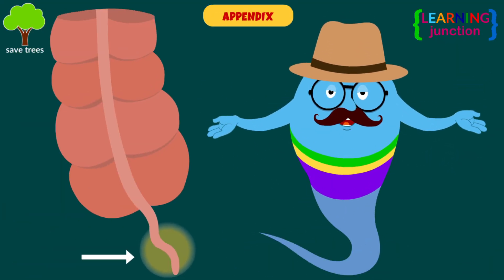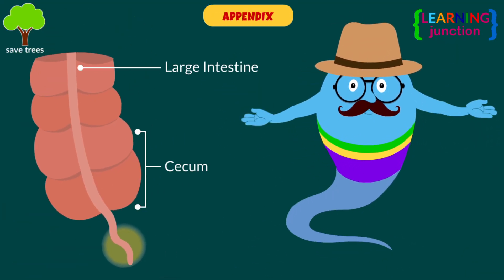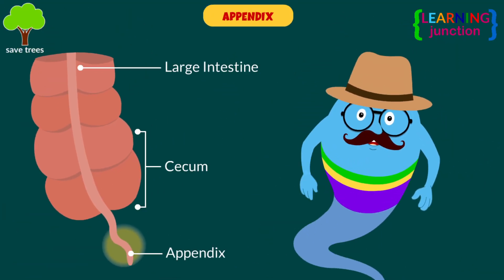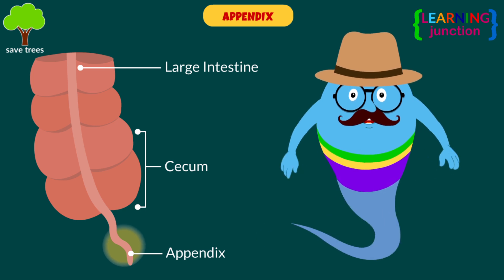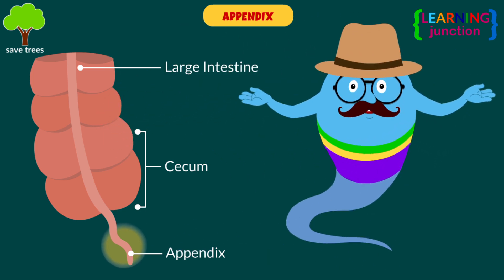Appendix: your appendix contains lymphoid tissue that can destroy bacteria before it breaches the intestine wall during absorption.